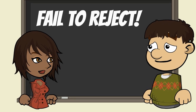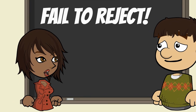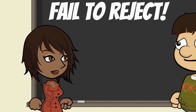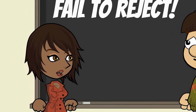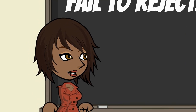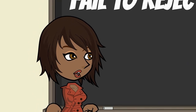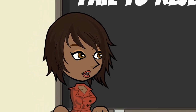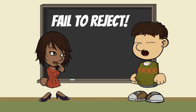Actually, it is a triple negative. Fail, reject, and null are all negatives. But the grammar issue is not as important as the logic of fail to reject. Except the null seems logical to me. Why is it wrong?